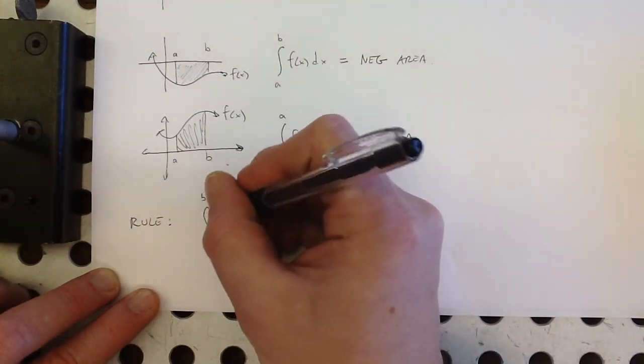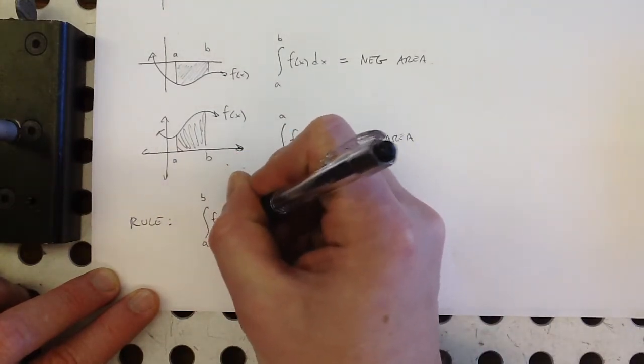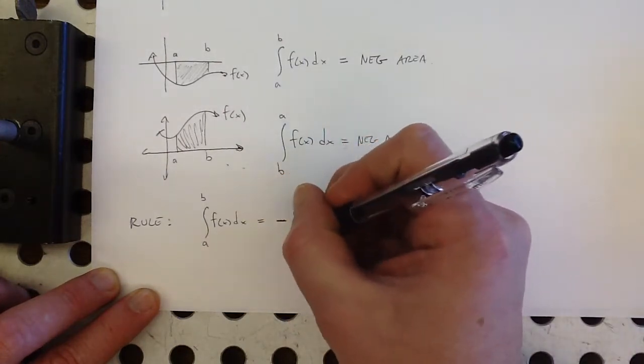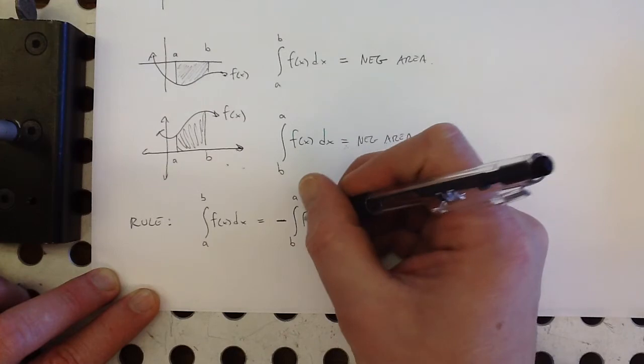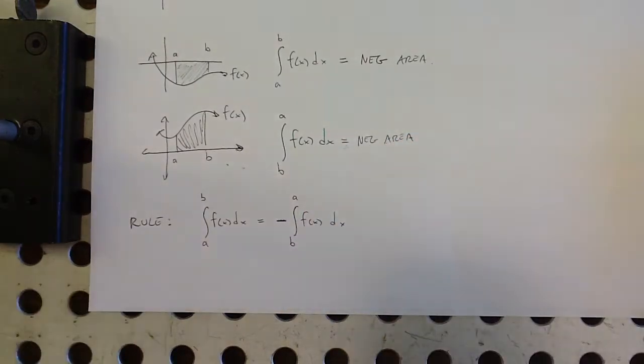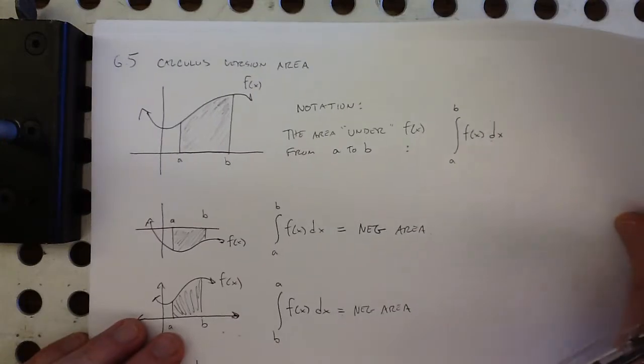So that gives us our first little rule here: the area from a to b under f of x is equal to the opposite of the area from b to a under f of x. So any time you feel like those are in the wrong order, you can switch them and just pop a negative sign out like that. That's rule number one.